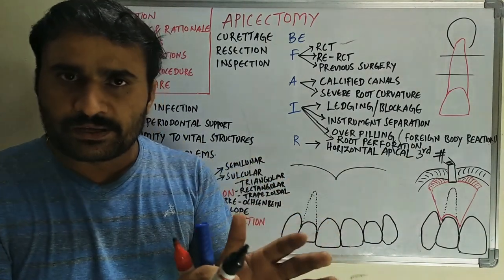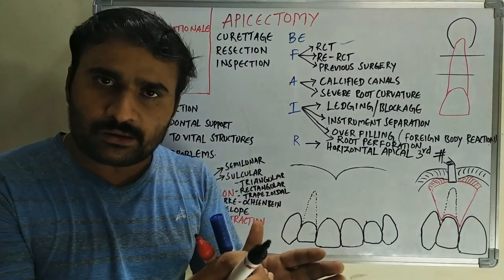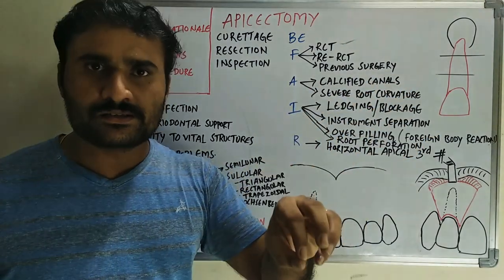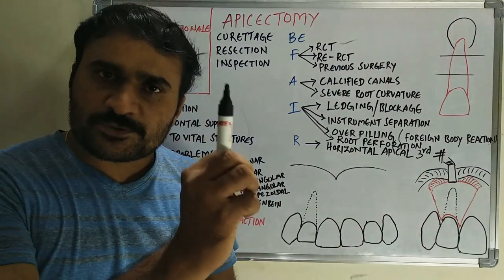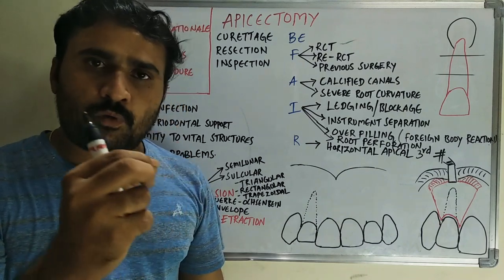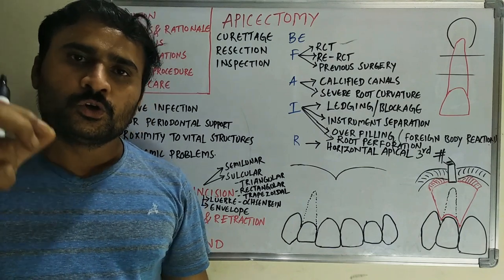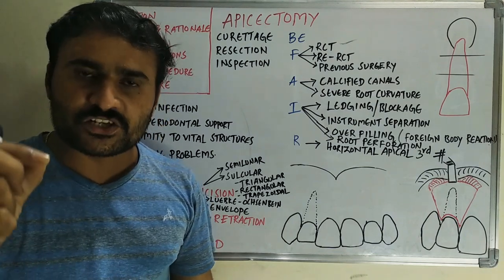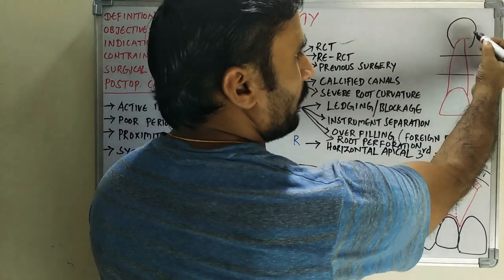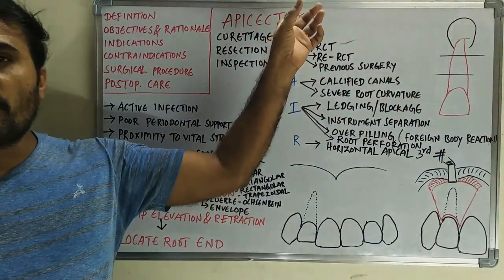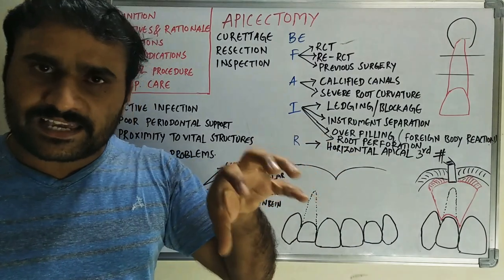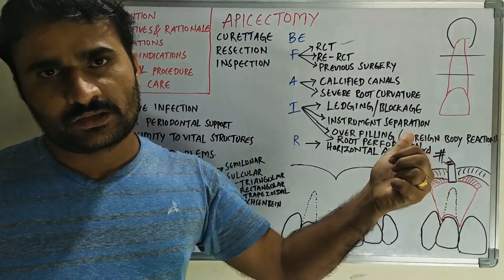A is for anatomical problems. Calcified canals or pulp stones may obstruct the pathway to the root apex. In cleaning and shaping, we must reach the apical constriction or apical foramen, but in calcified canals you cannot reach that point. Similarly, with severe root curvature, files cannot pass to the apical foramen. In those cases, apicectomy is indicated.